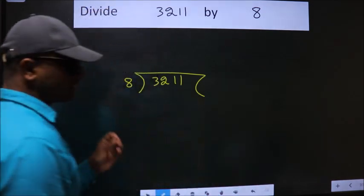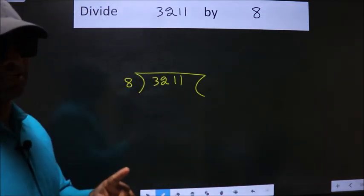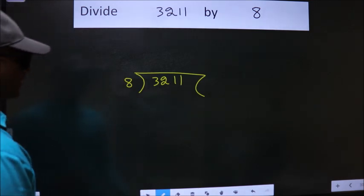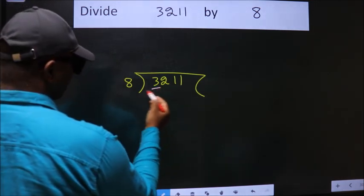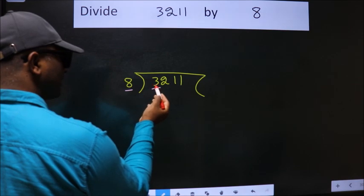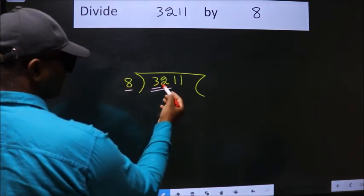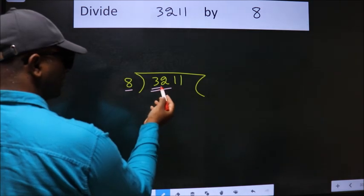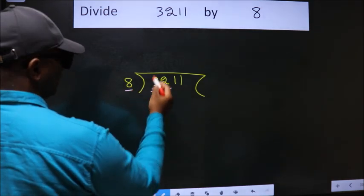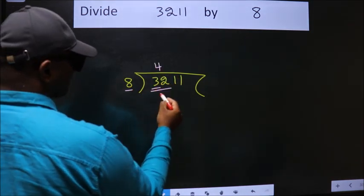This is your step 1. Next, here we have 3. Here 8. 3 is smaller than 8. So we should take two numbers: 32. When do we get 32 in 8 table? 8 fours 32.